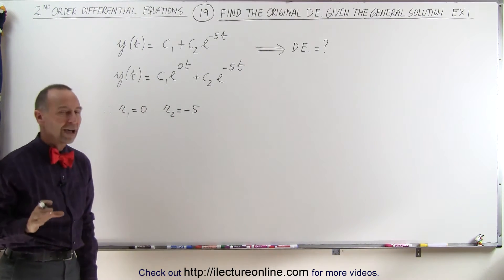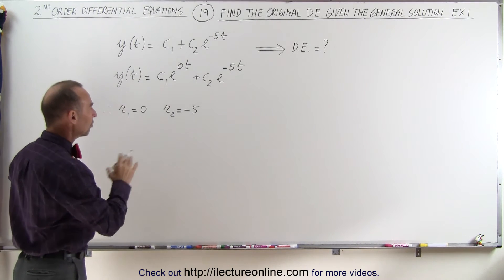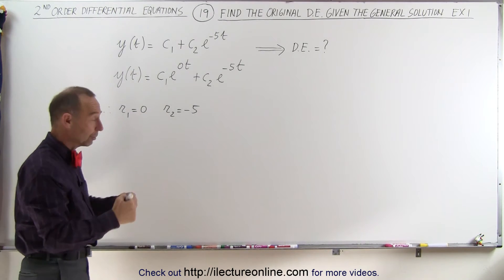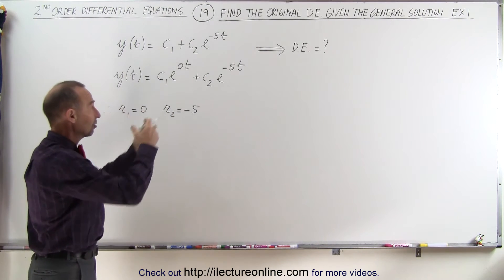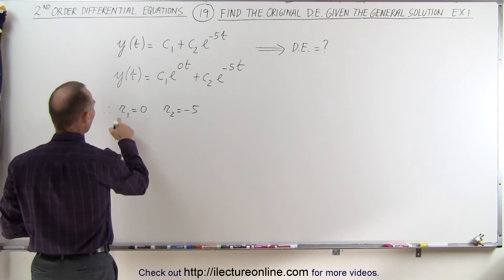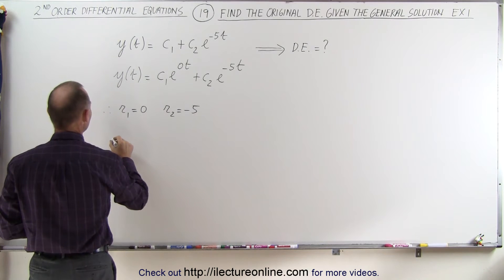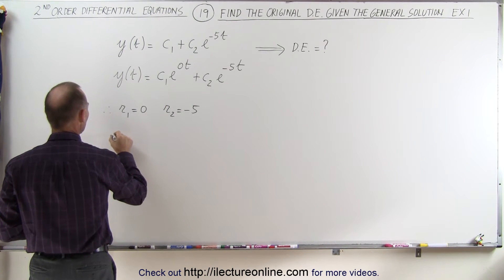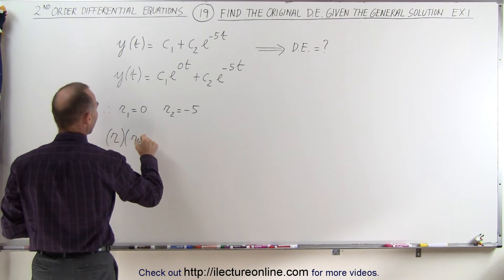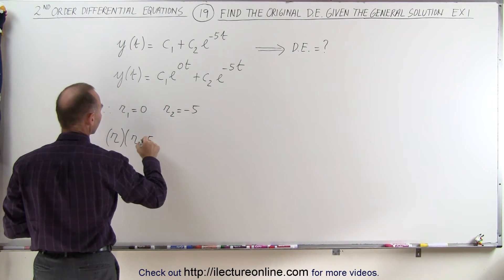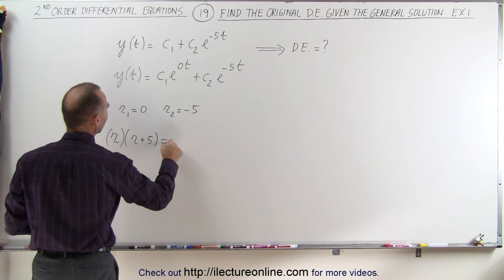So now we're going to try to find the characteristic equation. So we're working backwards, because eventually from the characteristic equation, we'll find the differential equation. So if r1 is equal to 0, we can then say that the equation looks as follows. That means that r times r plus 5 is equal to 0.